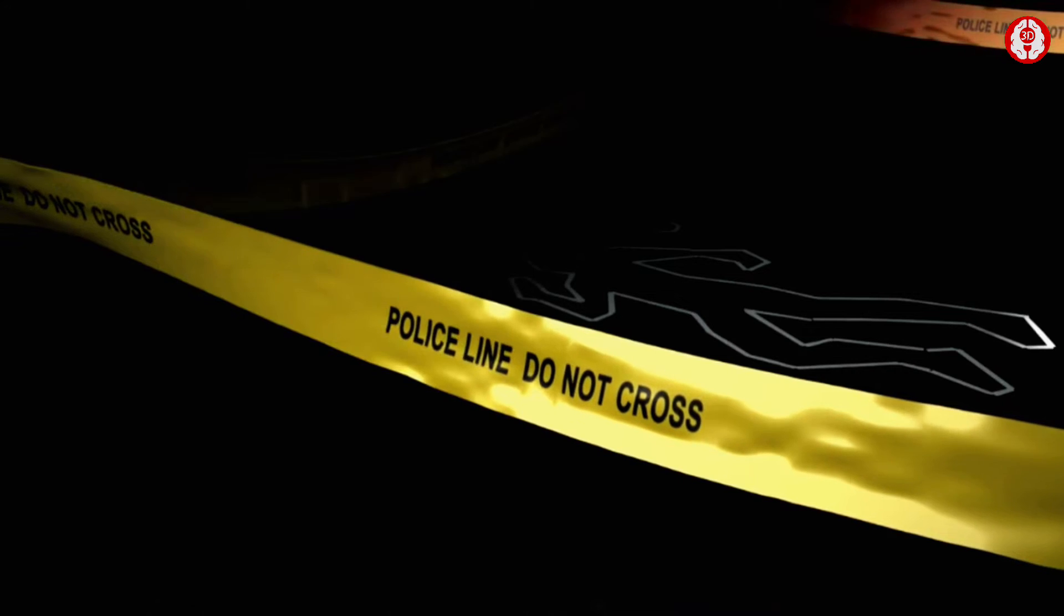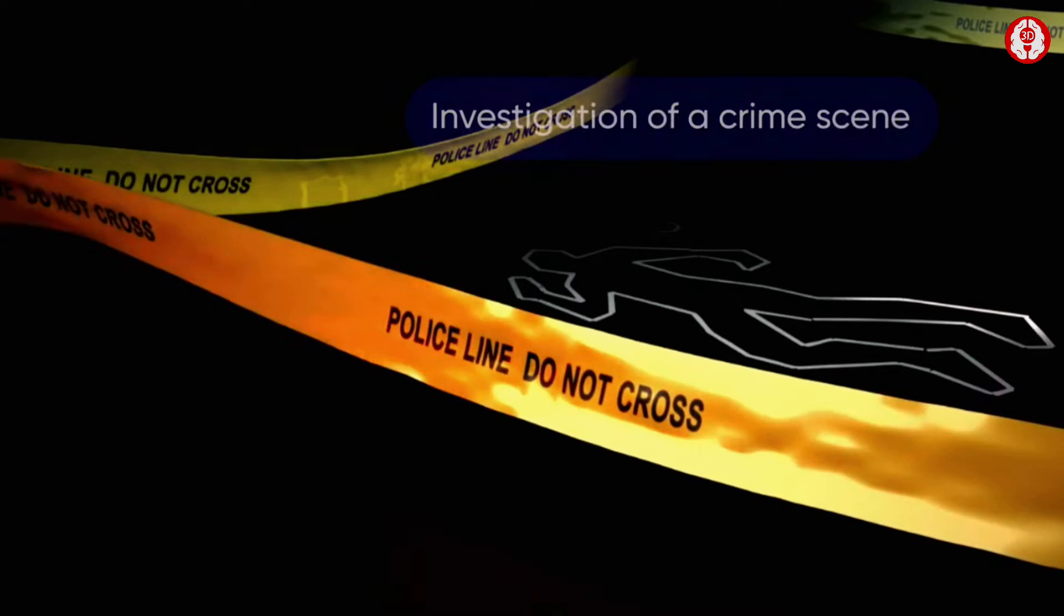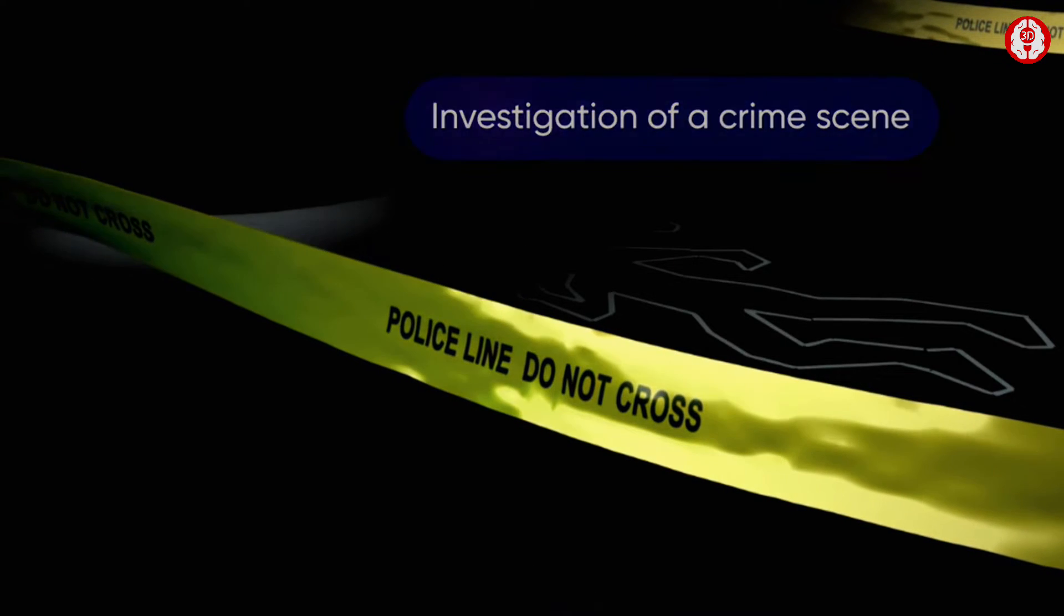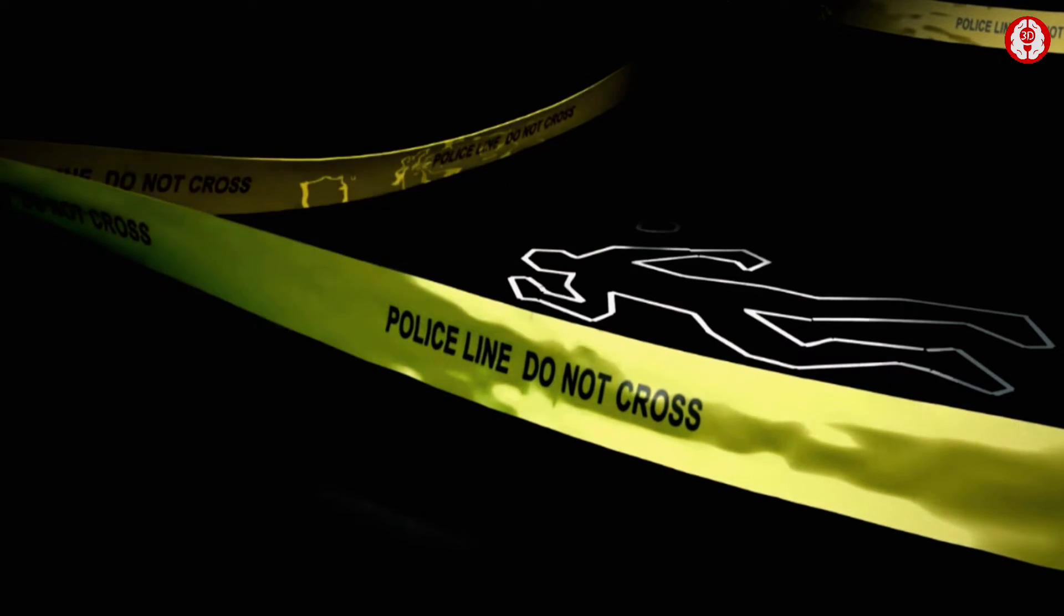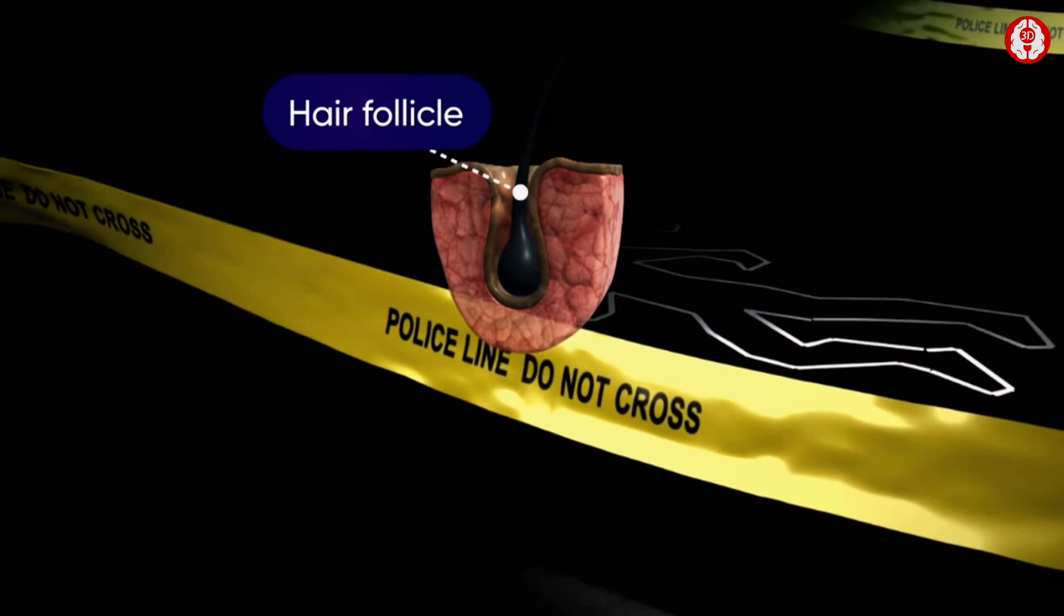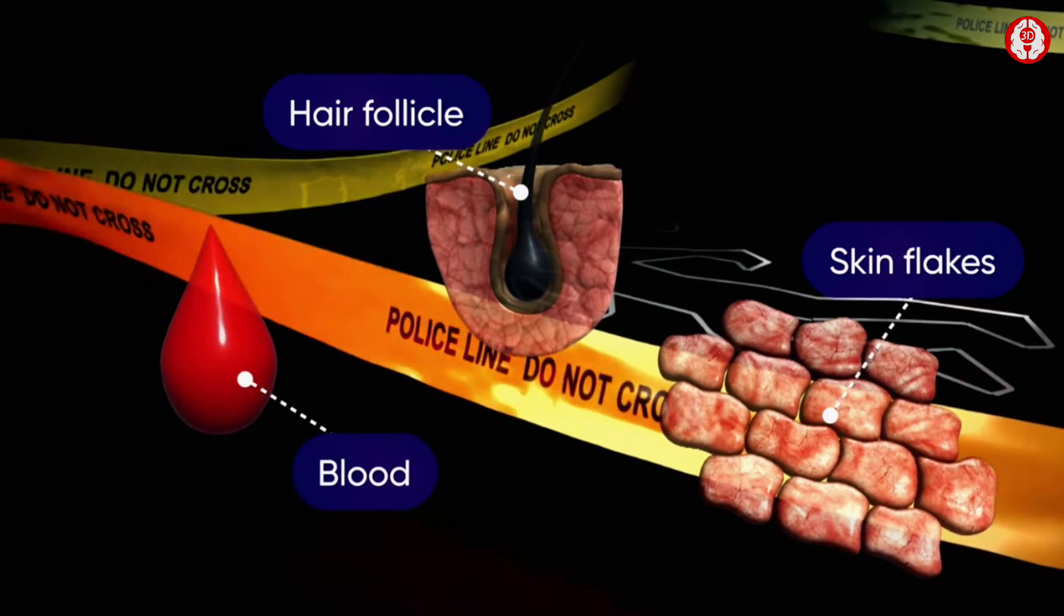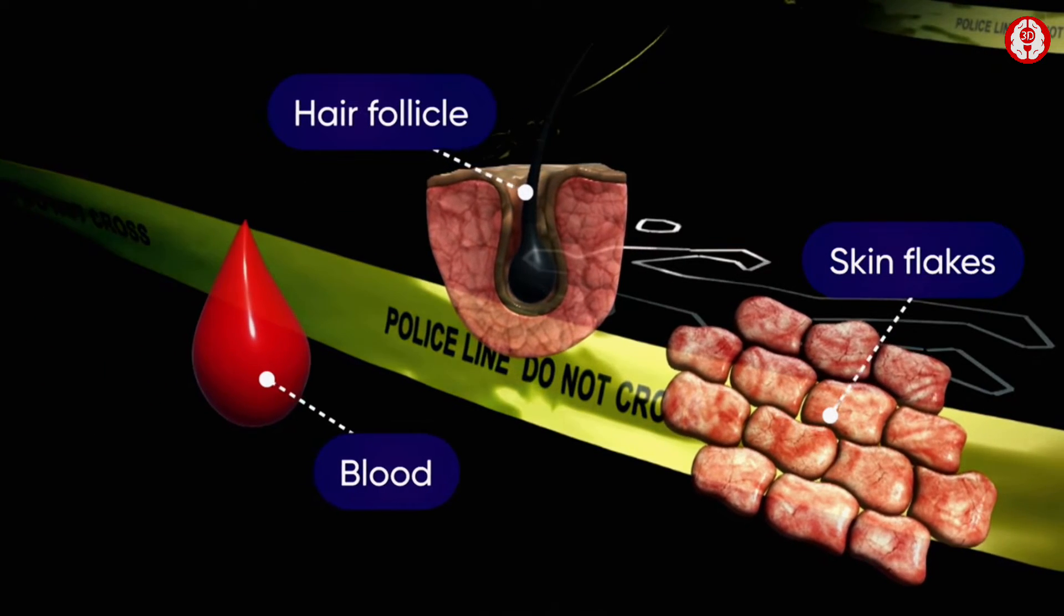Let us learn about the principle and technique of DNA through the investigation of a crime scene. But what are they looking for? There is evidence left behind by the perpetrator like hair follicle, saliva, semen, skin flakes or blood, where cells with nuclei can be isolated.